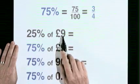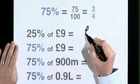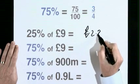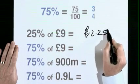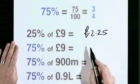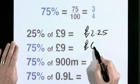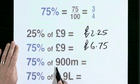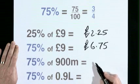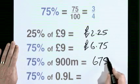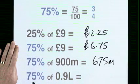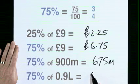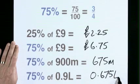25% of 9 pounds is 2 pounds 25, so 75% must be 6 pounds 75. 75% of 900 metres must be 675 metres. 75% of 0.9 litres is 0.675 litres.